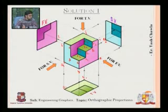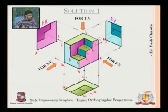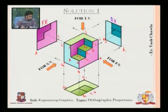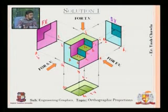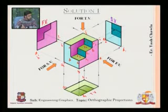This is a1 and this is a2, and this is a-dash. This b is extended up till here so I'll name it b1. This b is shown in this view so I'll name it b2. This b coincides with a here, so a-dash as well as b-dash is this point on the front view.